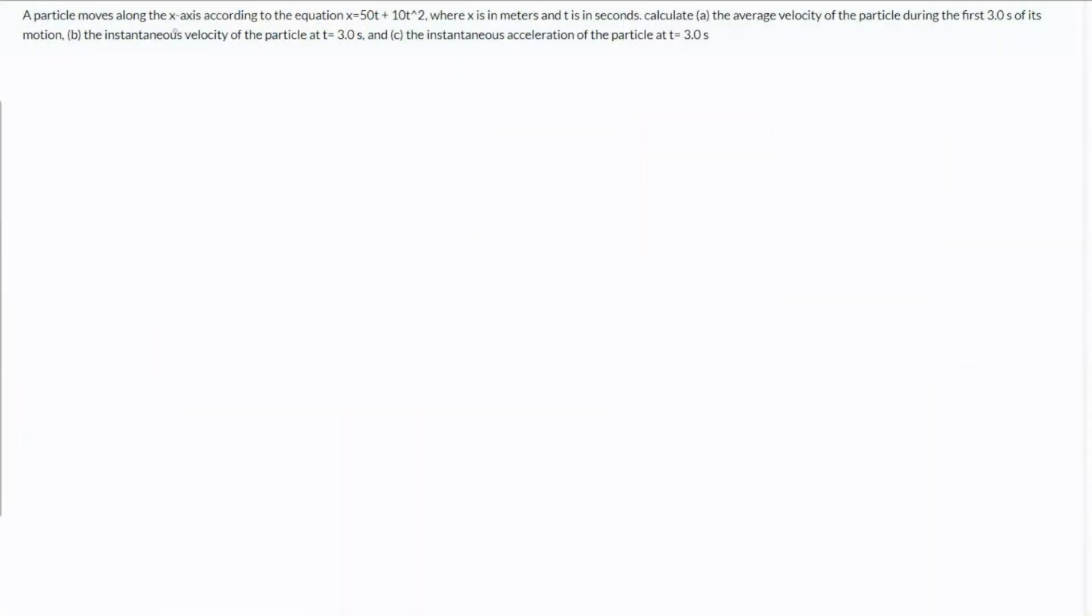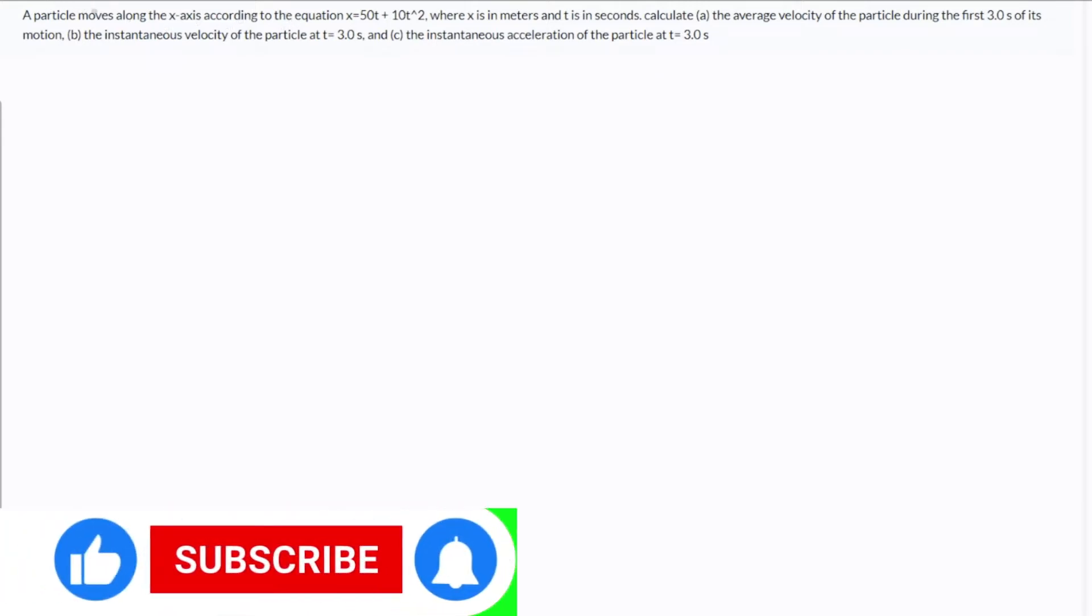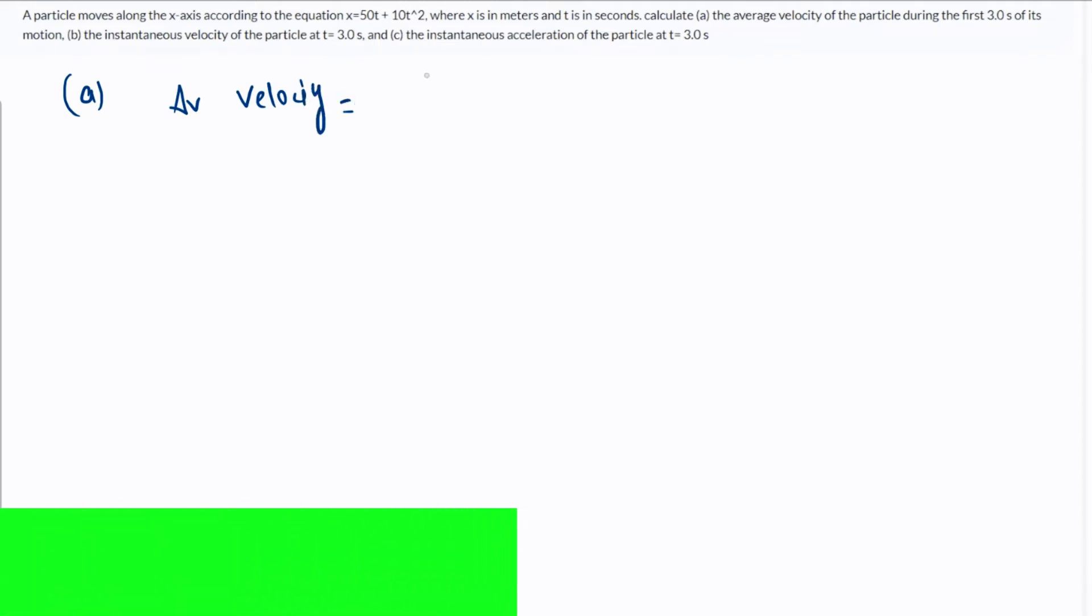The particle moves along the x-axis according to this equation. We have to calculate the average velocity for the first three seconds, instantaneous velocity at t=3, and instantaneous acceleration. The average velocity is the total displacement over the total time.